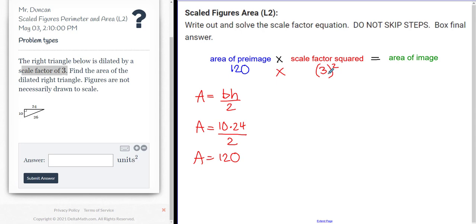So I have 120 times 9 squared should be equal to the area of the image. And then in this case, I'm just going to use A to represent the area of the image.